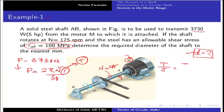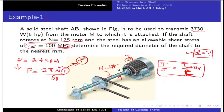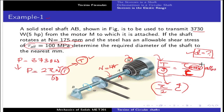From the torsional equation, T/J = τ/ρ. We take τ_max as the allowable shear stress, and instead of ρ, we use the outer radius C of the shaft. So the equation becomes T/J = τ_max / C. J in terms of radius is π/2 × C⁴. Substitute these values — τ_allowable is 100 MPa — and the only unknown is C.